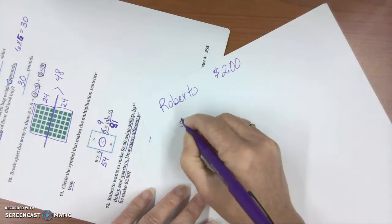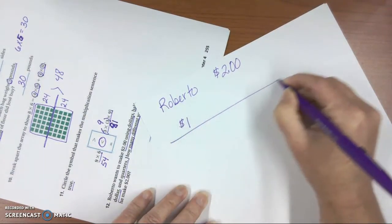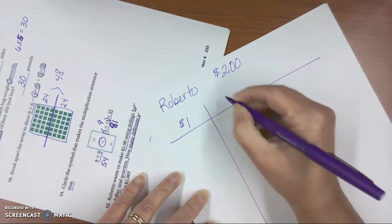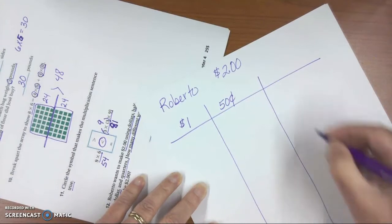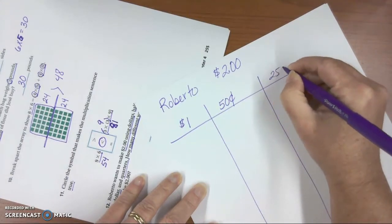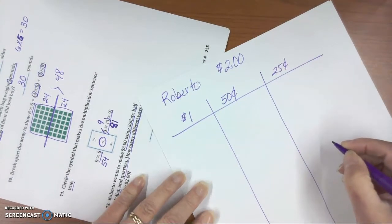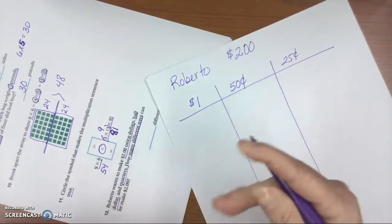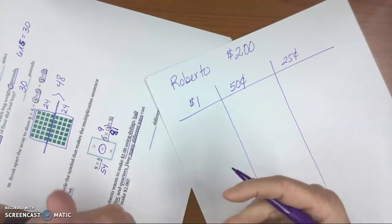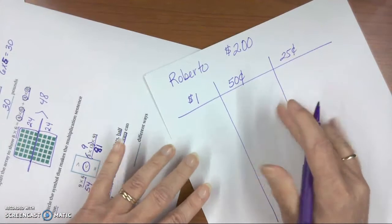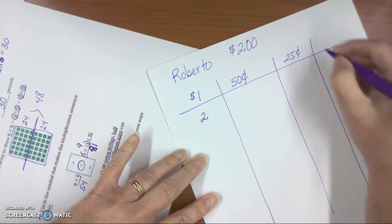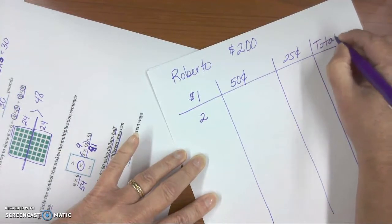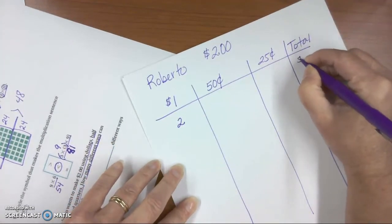And he wants to use that using dollar bills, 50-cent pieces, or half dollars, and then 25-cent pieces, or quarters. So that's how he wants to make it. So we're going to start with, what's the simplest way he could make $2? Well, he could use two $1 bills, and if he uses two $1 bills, he could have $2.